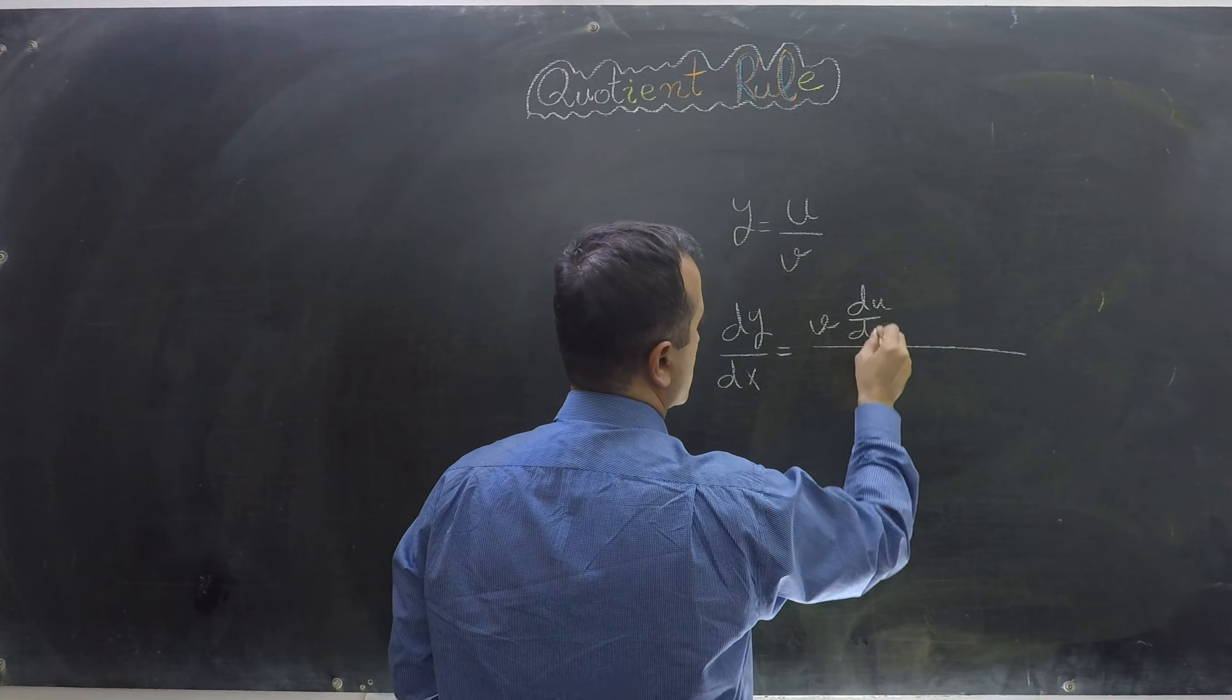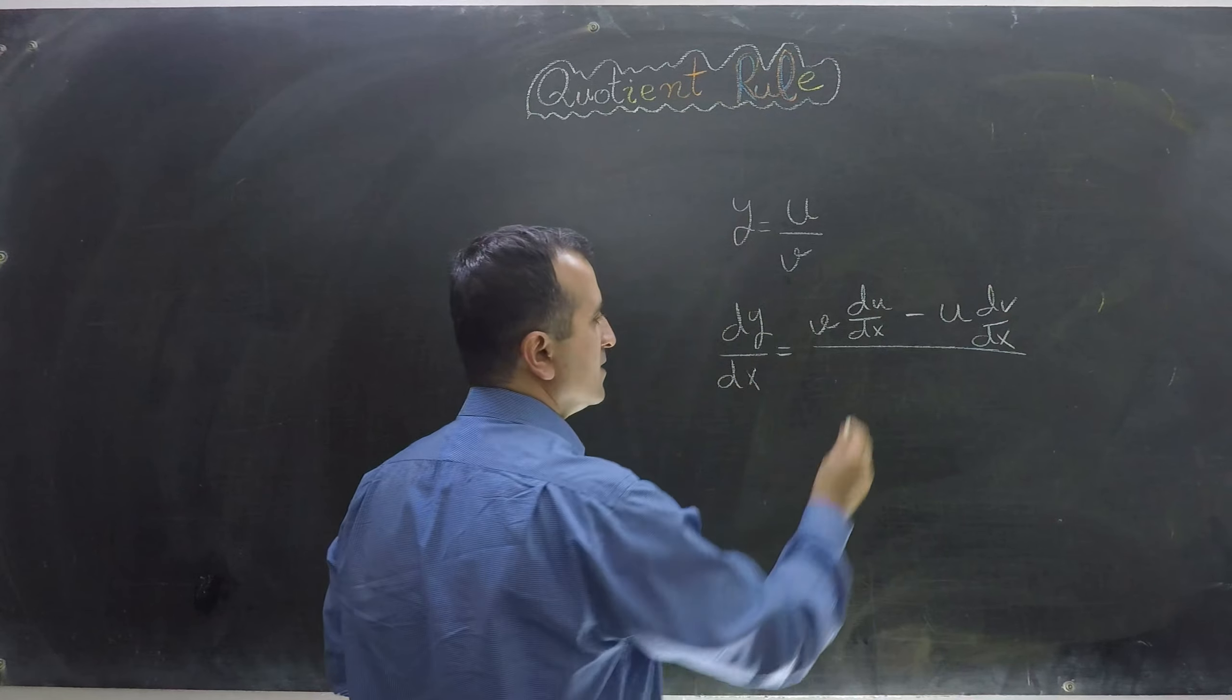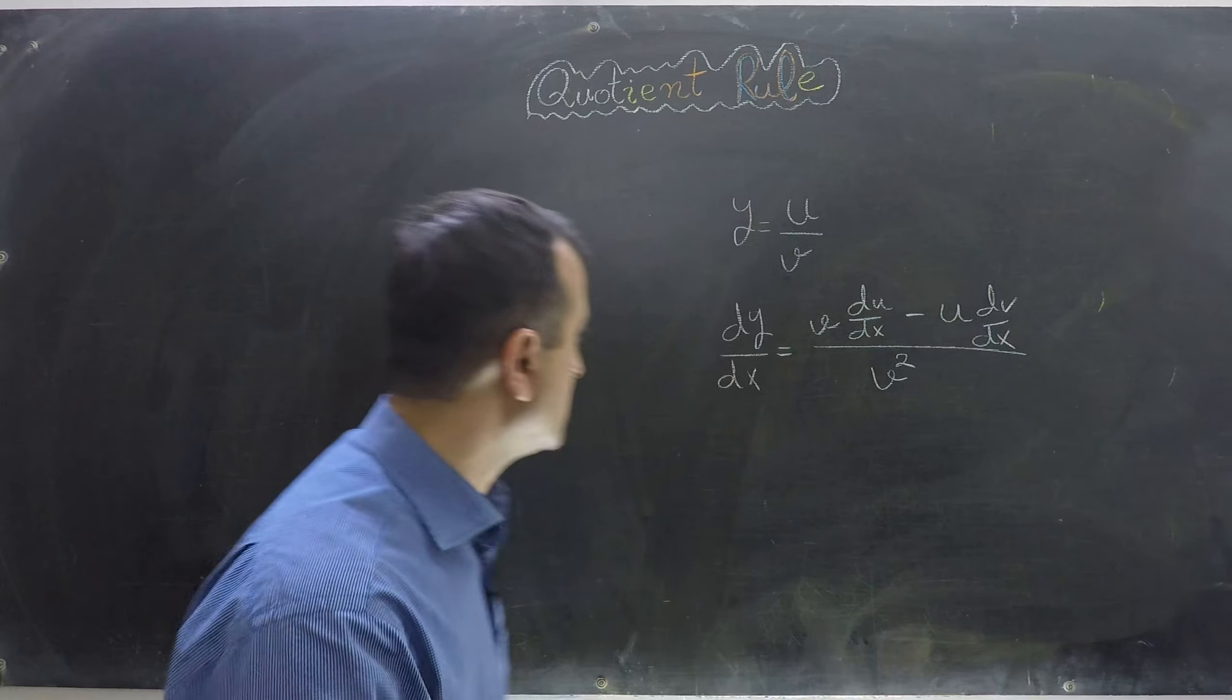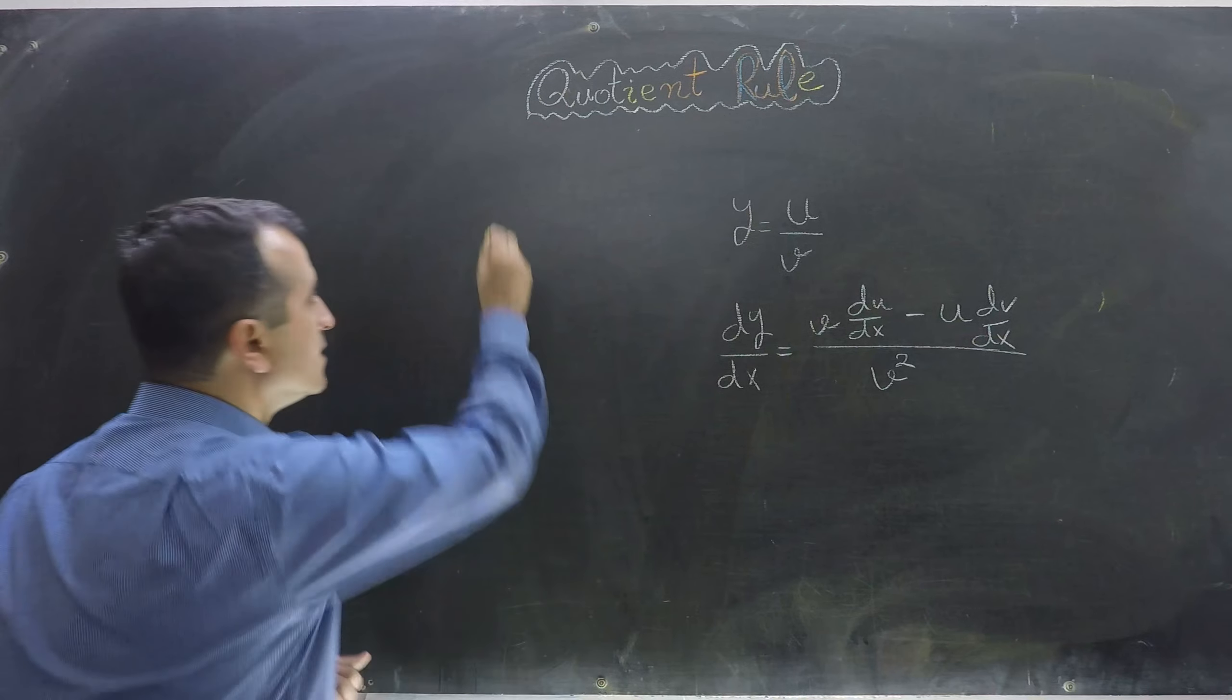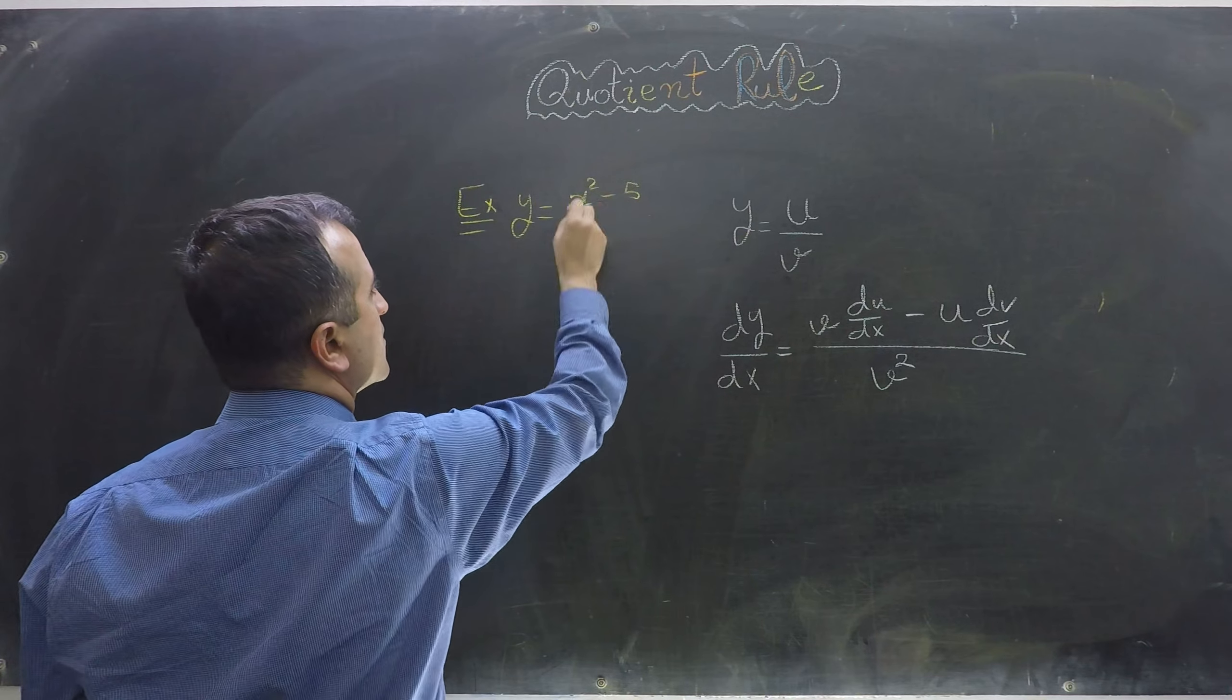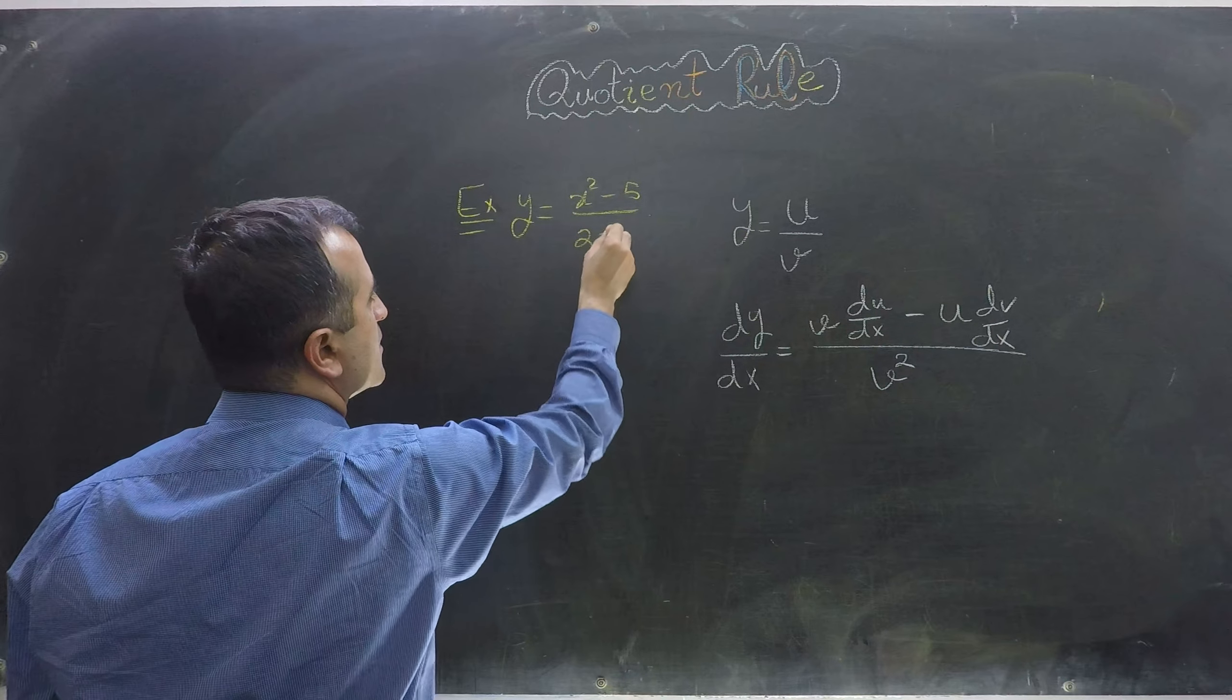The quotient rule says that in this case, my derivative dy over dx will be equal to: I keep my denominator as it is and write derivative of numerator, minus I keep my numerator as it is and write derivative of denominator, divided by square of denominator.